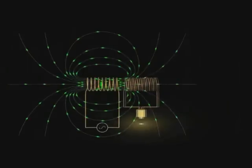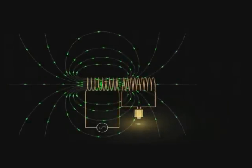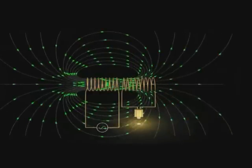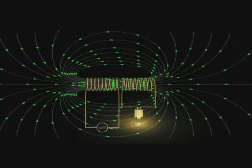Therefore, when we move the coils closer together, like this, more field lines of the first coil go through the second coil, which makes our light bulb brighter.